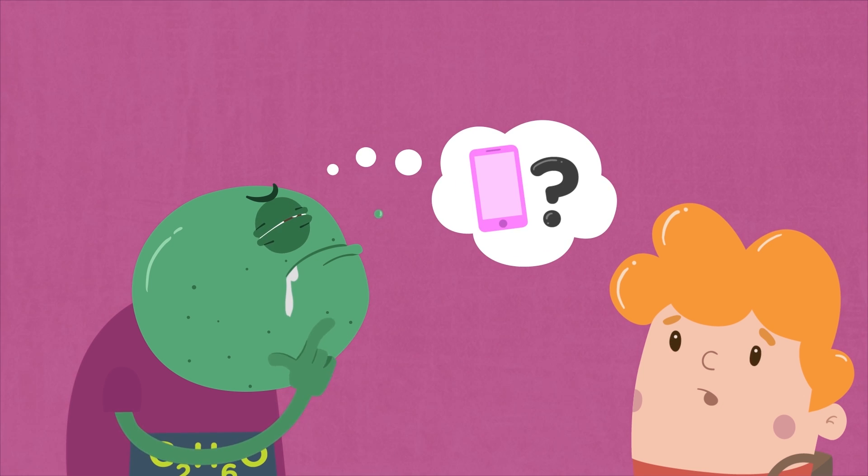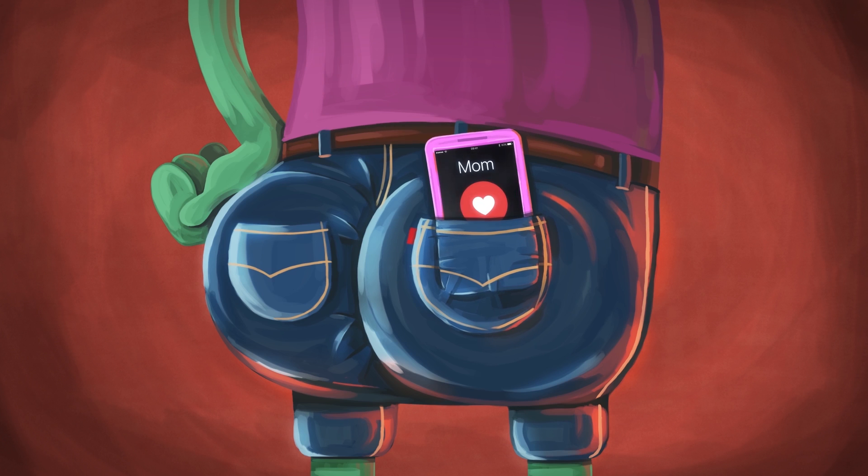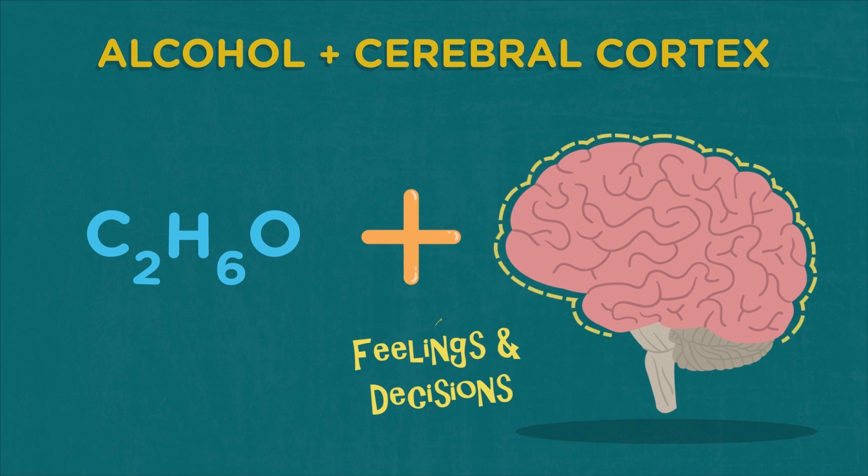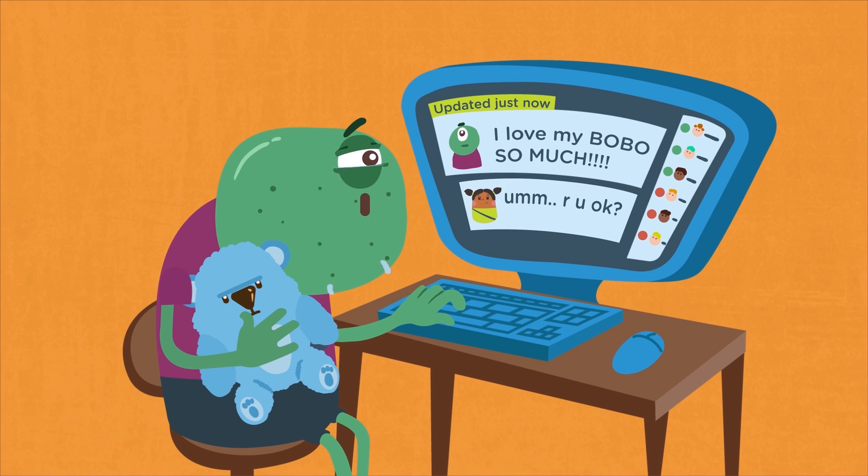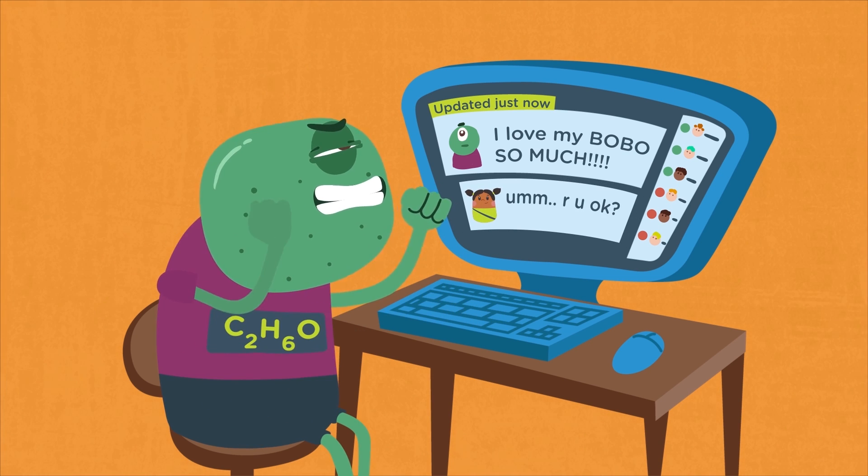And when alcohol hits your cerebral cortex, which has an important role in feelings and decisions, you may find it hard to control your emotions and get very sad or very angry for apparently no reason.